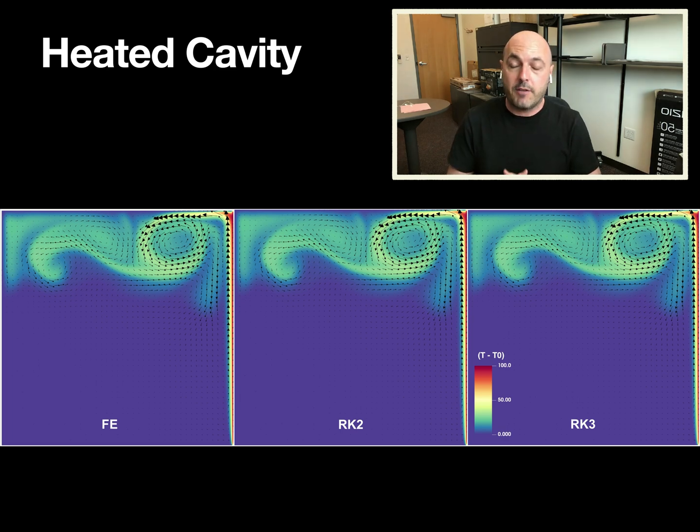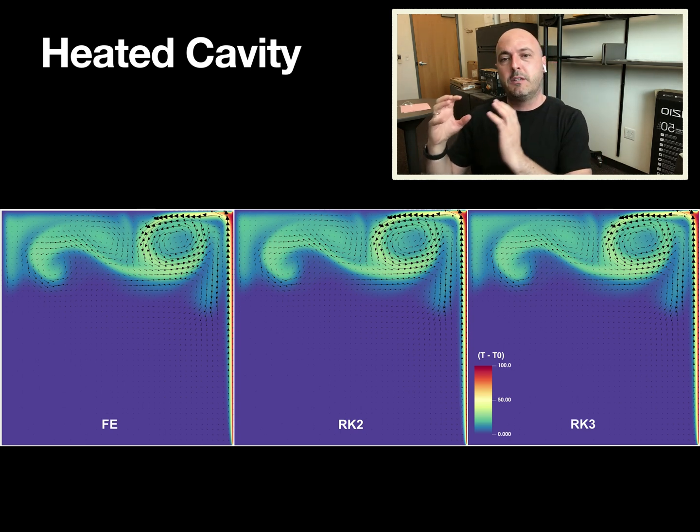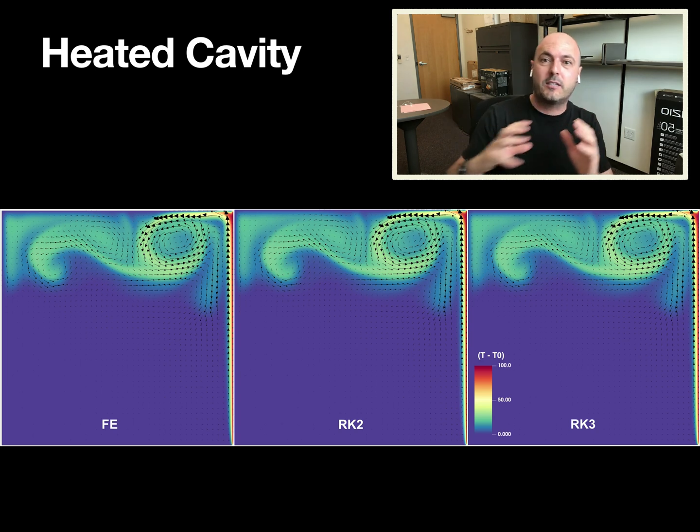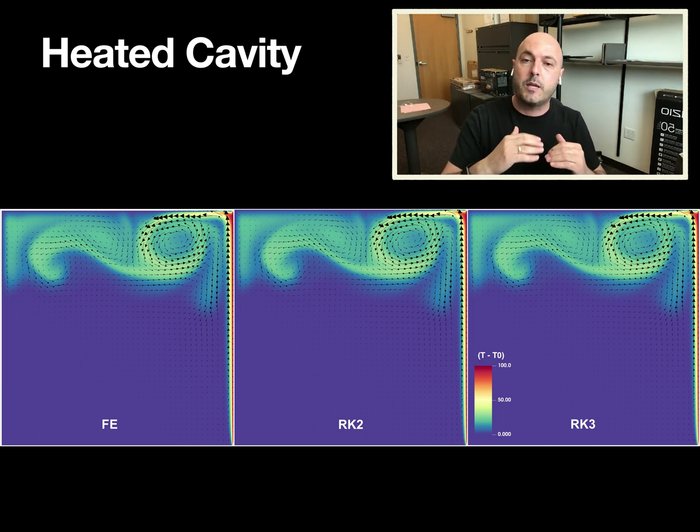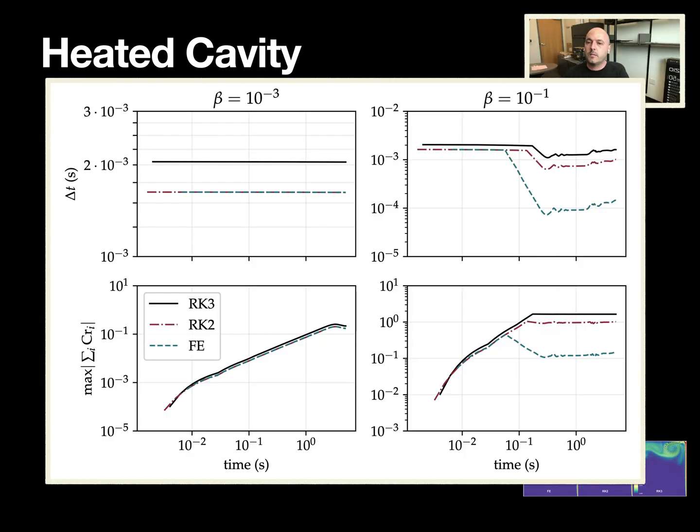Another case we wanted to test to see how we can go from the inner region to the outer region was a heated cavity. There's a cavity heated on the right-hand side with a heating rate coefficient that we can adjust. As the flow accelerates, we expect initially to be in the inner region, diffusion dominated. As the flow accelerates, we're going to move to the outer region. That's where we're going to see a separation between the different integrators. And indeed, this is exactly what we see.